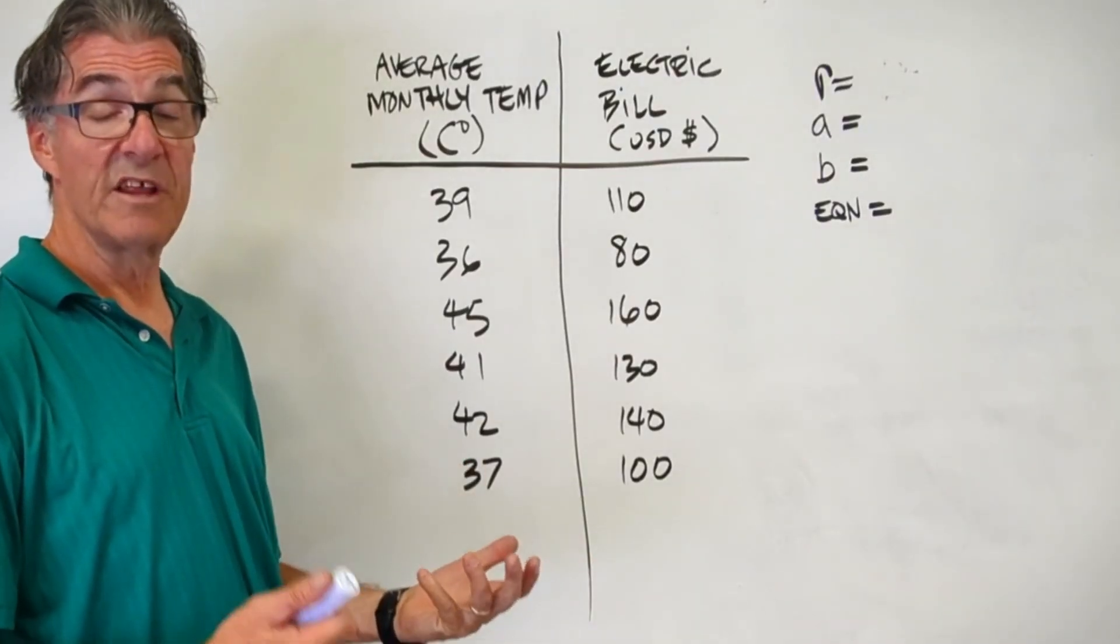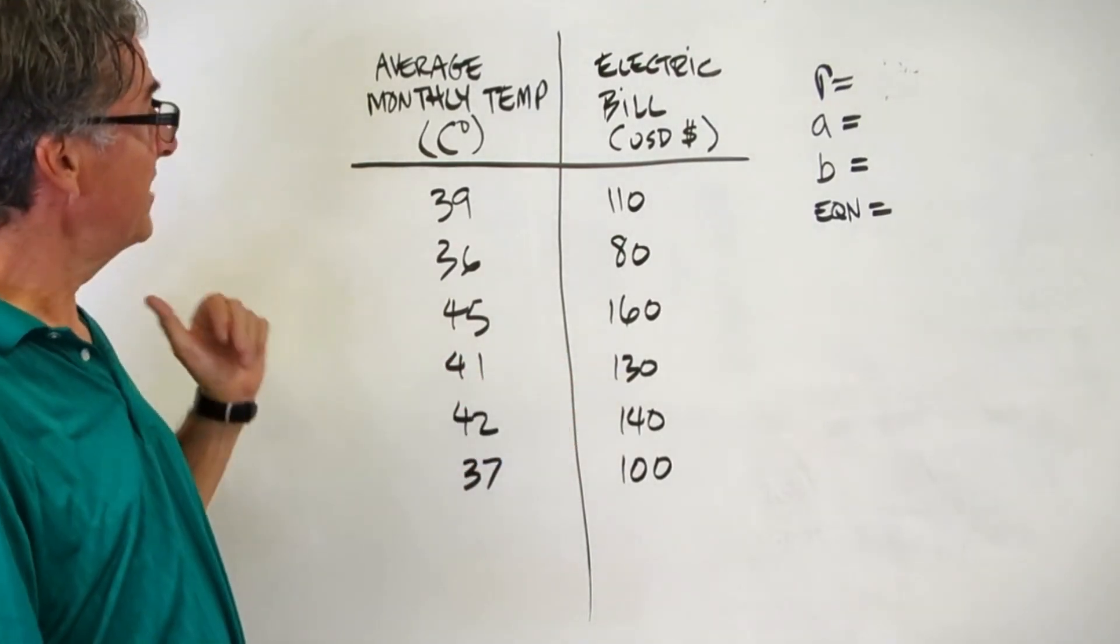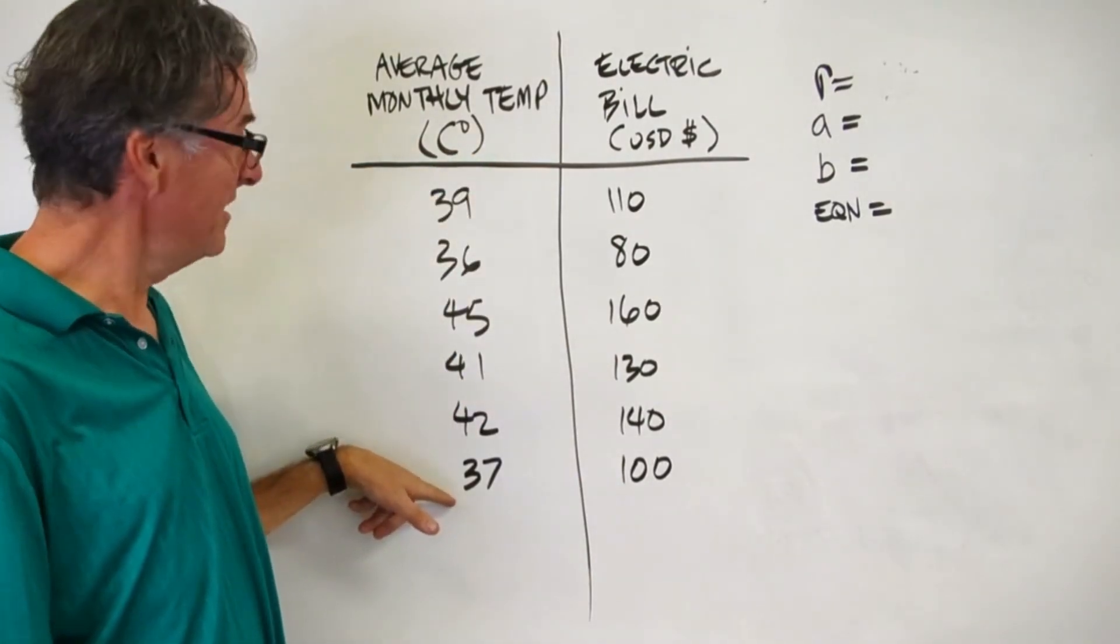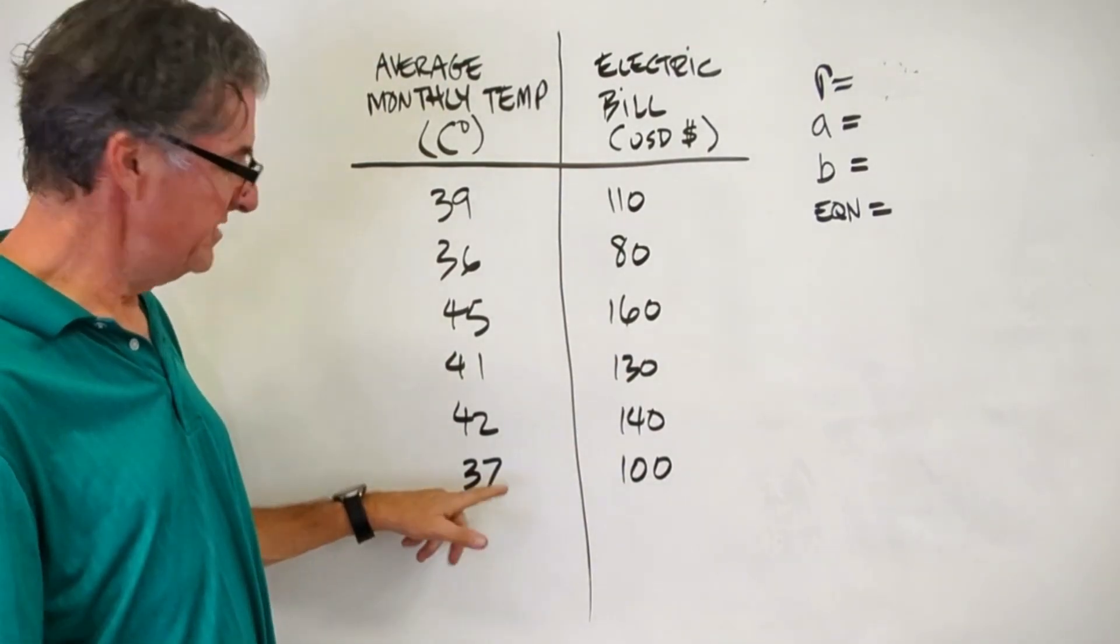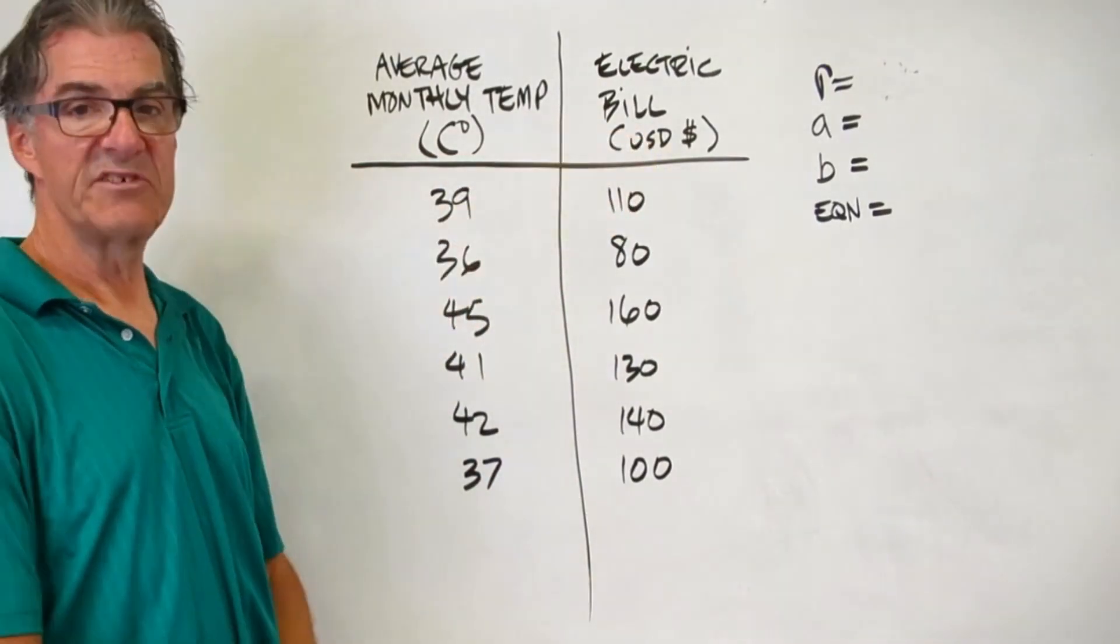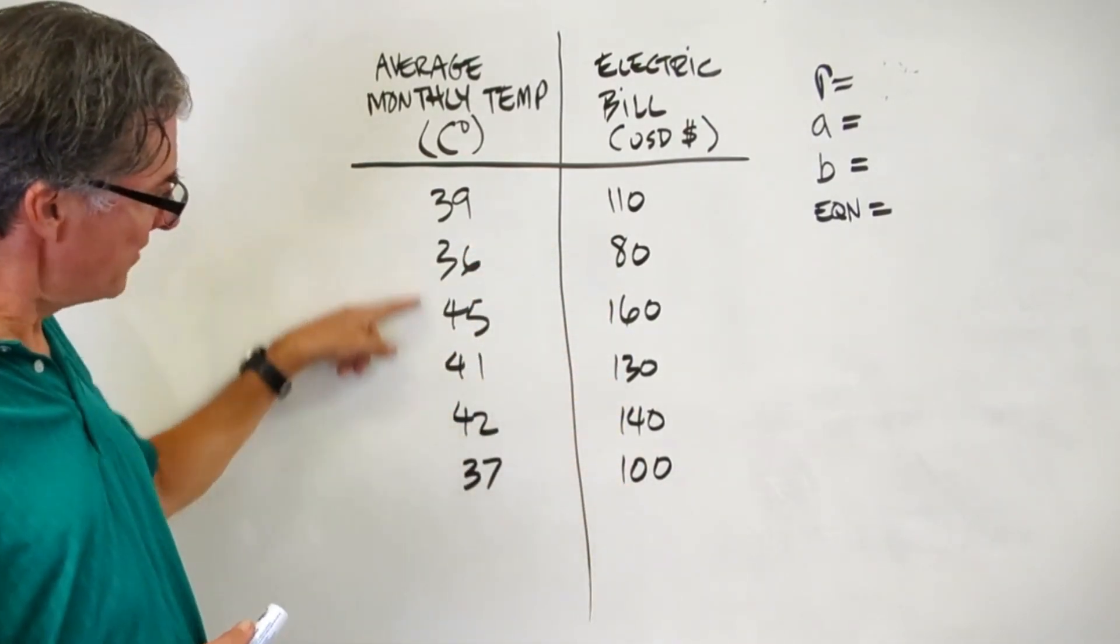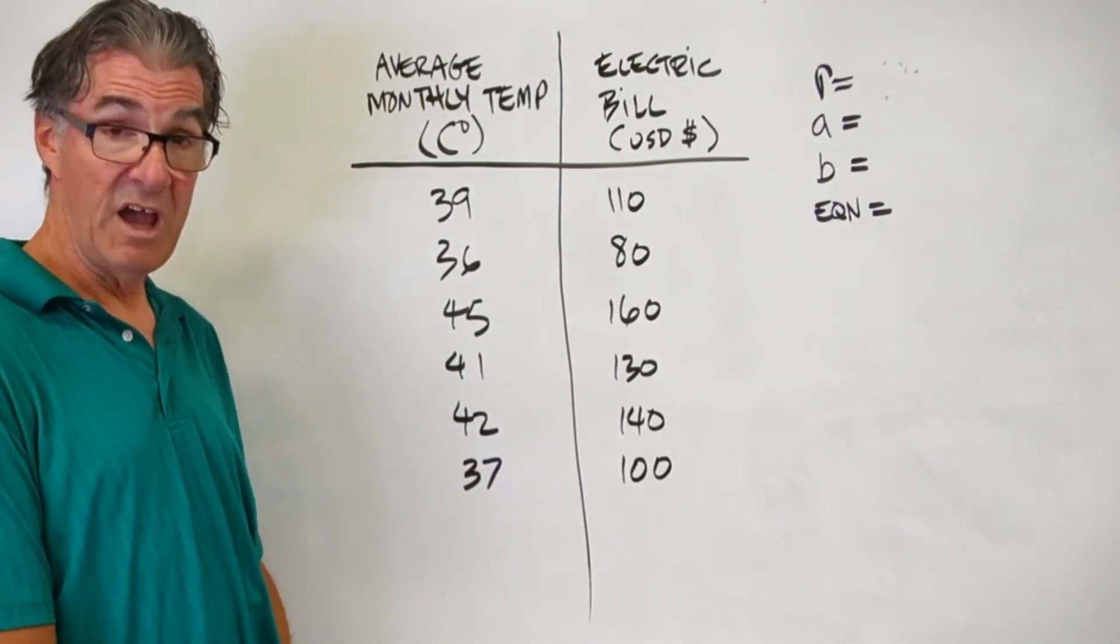And now you've had a chance to go through it with your calculator one time, you should have no problem with it this second time. So here's our data. Average monthly temperature in degrees Celsius. So you can see, this is a pretty warm spot, maybe Phoenix, Arizona, maybe somewhere in the Middle East. It's definitely high temperatures. And the electric bill, cost in US dollars. So probably Phoenix. So you'll notice that we have prices there, cost of electric bills. And roughly speaking, the higher the temperature, the higher the bill.